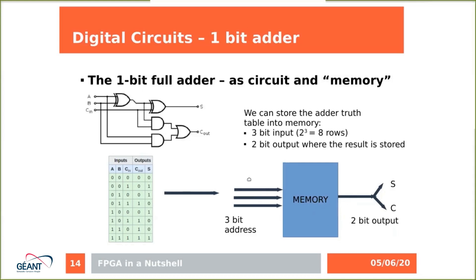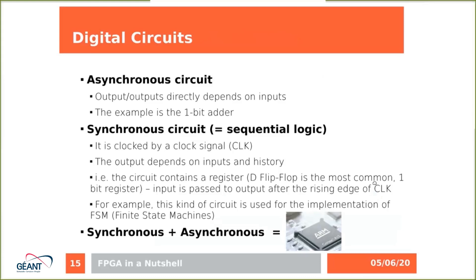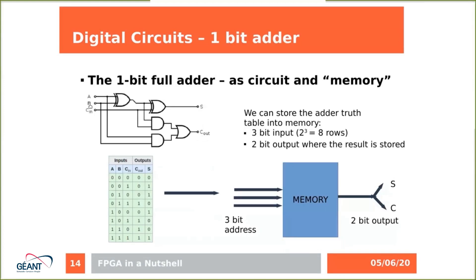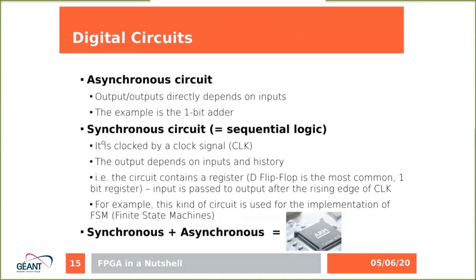Digital circuits are typically divided into two main groups. The first group is asynchronous circuits, where outputs directly depend on inputs — the one-bit adder is an example, and as you can see, there is no clock signal. The synchronous circuit can be understood as sequential logic — this kind of digital circuit is clocked by a clock signal and the output depends on inputs and history.